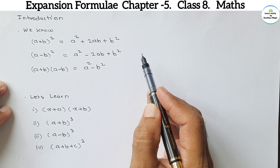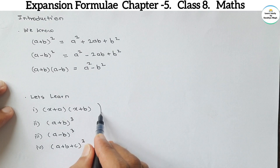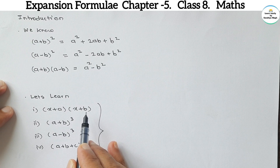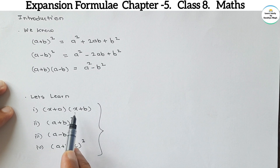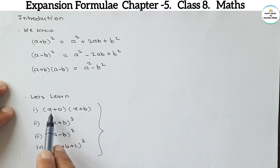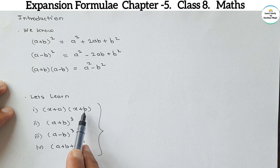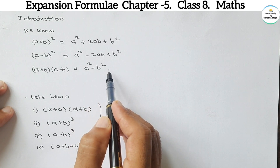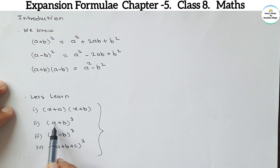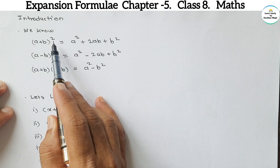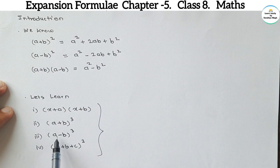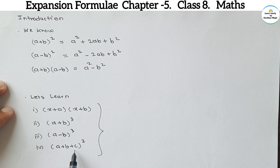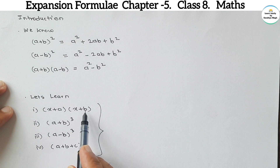In this chapter we will study new expansion formulas. The first one is (x+a)(x+b) — here one variable is common and the other is different, making it distinct from the standard identities. The second is (a+b)³, and similarly (a-b)³. The last one is (a+b+c)², which has three variables. All these expansion formulas we will learn in this video.